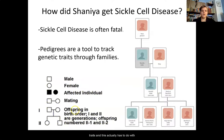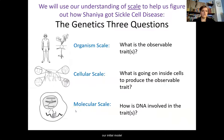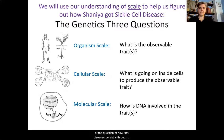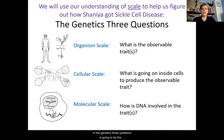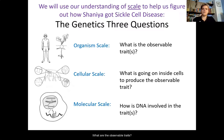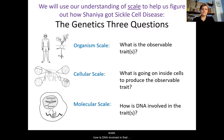That's how you read a pedigree to track different traits. This relates to our initial model. When looking at how fatal diseases persist, we consider the three scales we've been working with all year: the organism scale, the cellular scale, and the molecular scale. The genetics three questions are: what are the observable traits? What's going on inside the cells to produce those traits? And how is DNA involved in those traits?